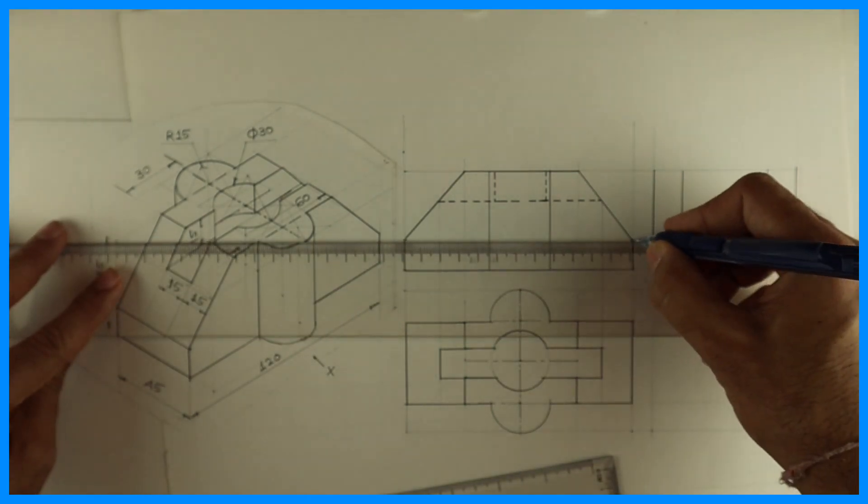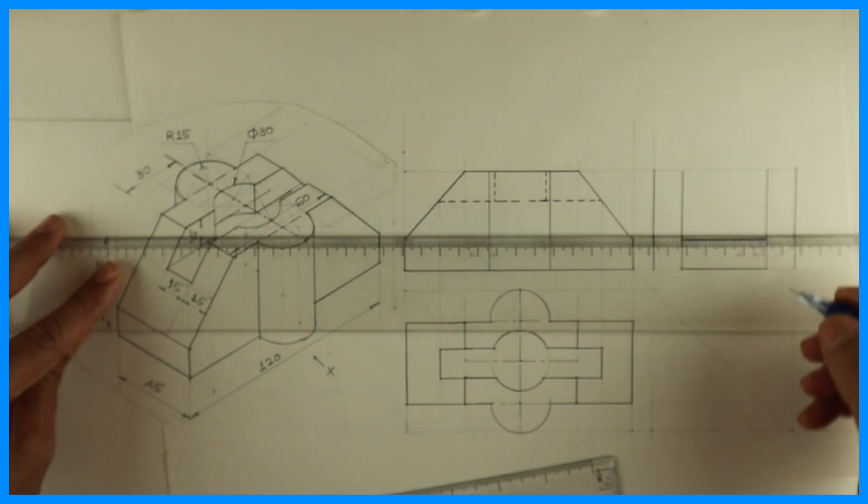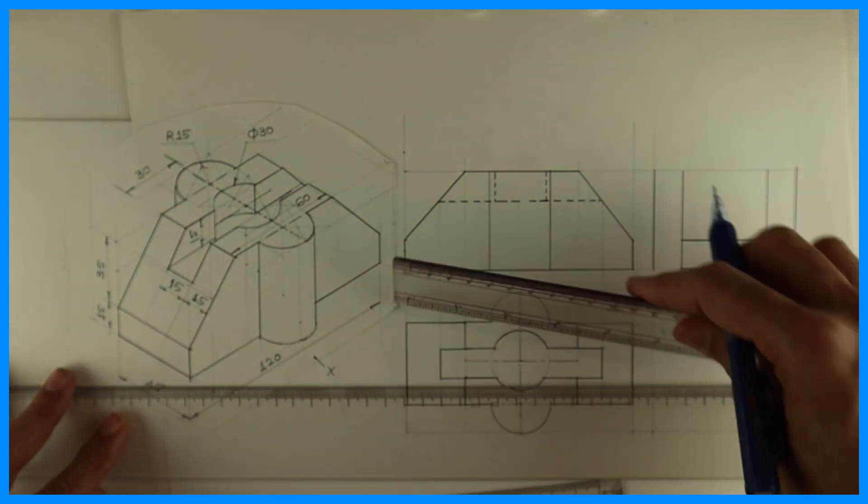Now this line will be dark, but it will be only in the middle. This bottom line will also be dark.